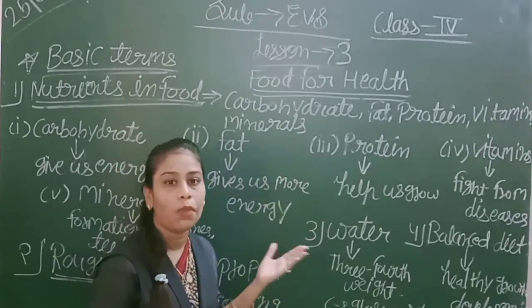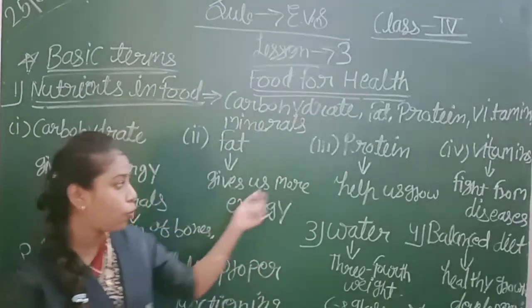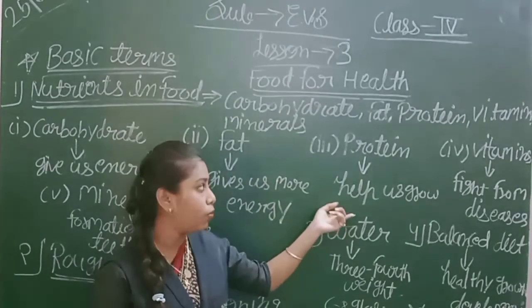Third is protein. Protein helps us grow. Protein is found in eggs, milk, and similar foods.